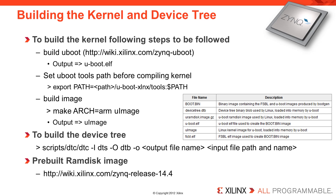The device tree file .dts can be compiled using the following command, assuming this is executed from the root directory of the Linux kernel tree. The predefined device tree sources are available in the Linux kernel tree in the following directory: arch/arm/boot/dts of the kernel tree. For the ZC702 board, it is named zynq-zc702.dts.